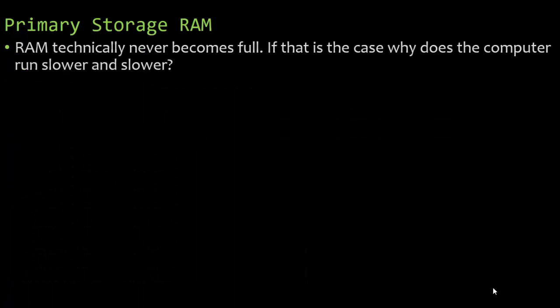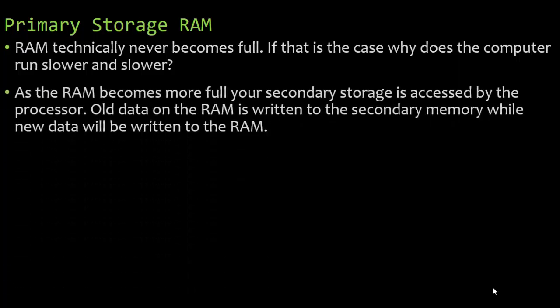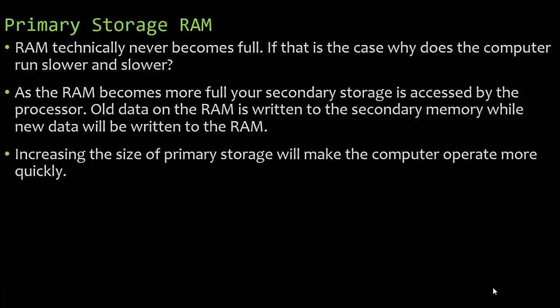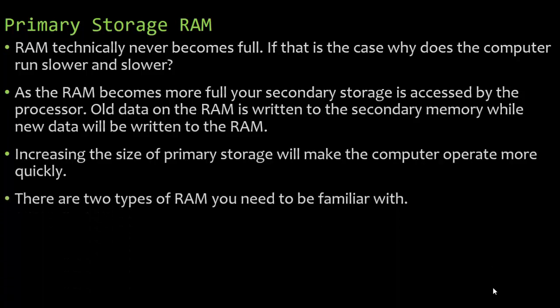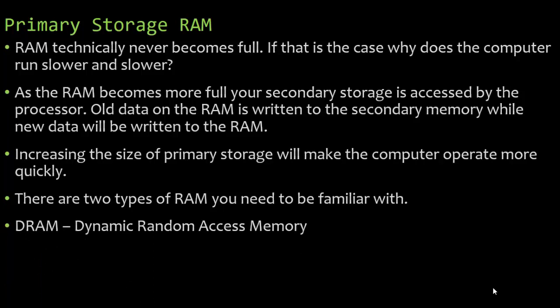RAM technically never becomes 100% full, so why does the computer run slower and slower? As the RAM becomes more full — not 100%, but more full — your secondary storage, your hard drive, is accessed by the processor. Old data on the RAM is written to secondary memory, while new data is written to the RAM. Increasing the size of your primary storage will make the computer operate more quickly. There are two types of RAM: dynamic random access memory (DRAM) and static random access memory (SRAM).